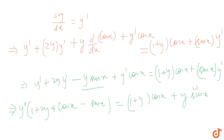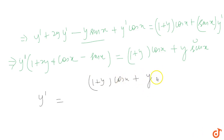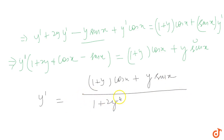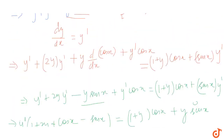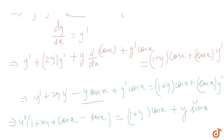We are almost done. The final answer for y dash is: y dash equals 1 plus y cos x plus y sin x, all divided by 1 plus 2y plus cos x minus sin x. This is the required differentiation of the given infinite continued fraction expression.